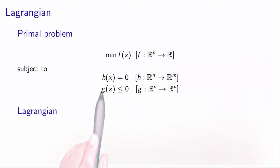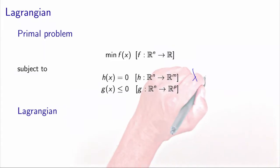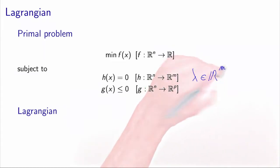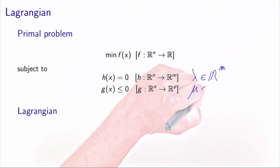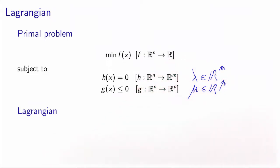We will associate with each of the m equality constraints a penalty parameter that we will call lambda. So lambda will be a vector of R^m because there are m equality constraints. And in the same way, we will associate penalties for the inequality constraints, which we will call mu. Mu will belong to R^p because there are p inequality constraints.